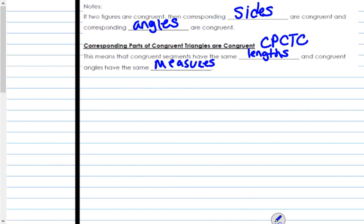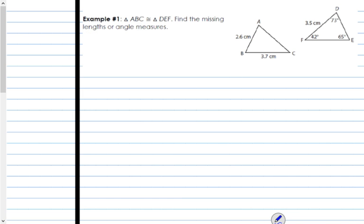So, CPCTC. Example 1: Triangle ABC is congruent to triangle DEF. Find the missing lengths or the missing angle measures.